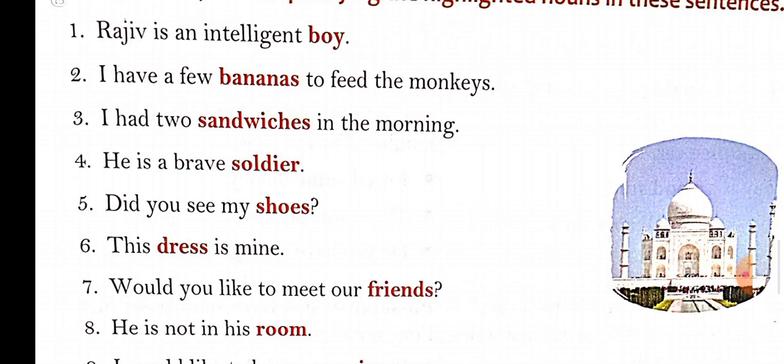Fifth: Did you see my shoes? — adjective of possession. Because a question is being asked in sentence number five. Sixth: This dress is mine — the adjective is demonstrative. Seventh: Would you like to meet our friends? — interrogative adjective, because a question is being asked.